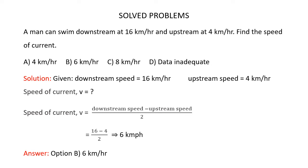Downstream speed is 16 km/h and upstream speed is 4 km/h. Substituting these values: speed of the current is 16 minus 4 divided by 2, which is 6 km/h. So the speed of the current is 6 km/h and the correct answer is option B, 6 km/h.